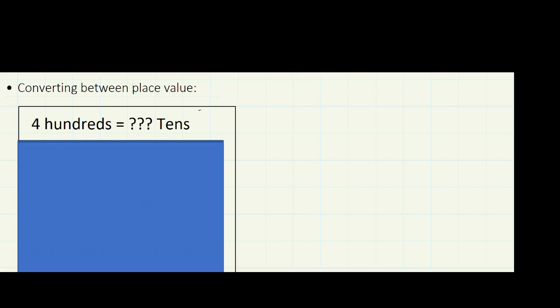Next we'll look at converting between place values. You might not understand what that means, but let's look at this — it's a very common kind of question you'll see in tests. Four hundreds equals how many tens? So four hundreds — let's do our place value chart. Units, tens, hundreds — four hundreds means four in the hundreds column.